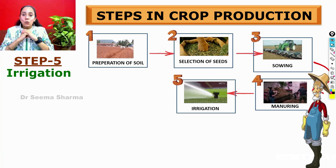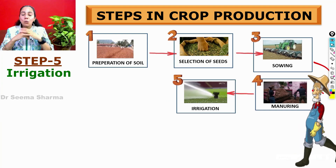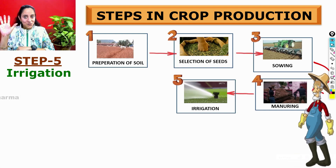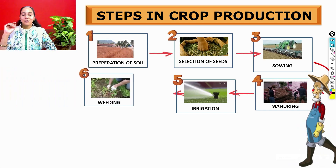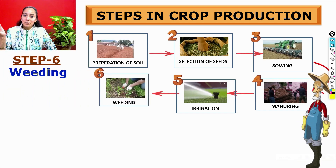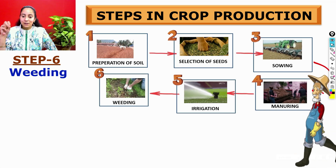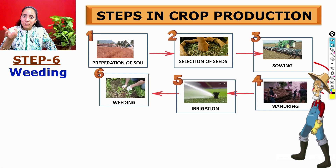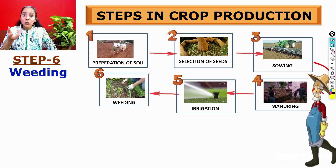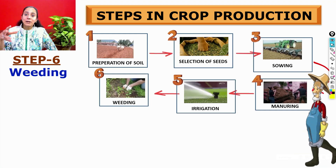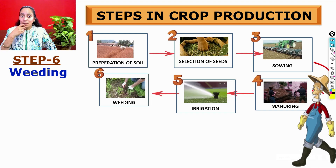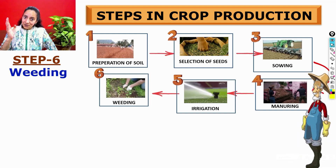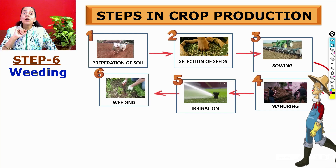In irrigation, we consider at what stage watering of the plants is required and how much water is required — that is taken care of in the fifth step. The sixth step is weeding. When we are adding manure and water to the field, some unwanted seeds also grow and start competing with our crop. So we have to remove them, and this process is called weeding.